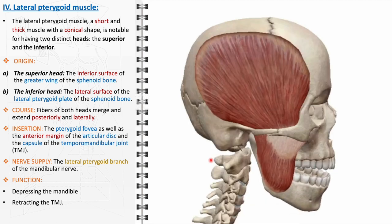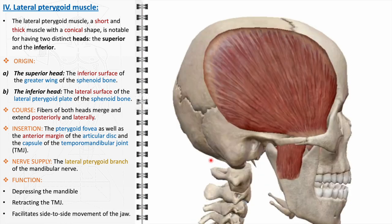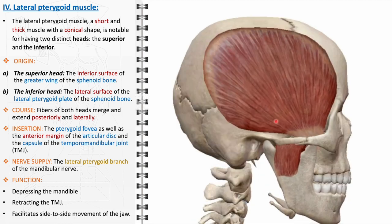The lateral pterygoid enables side-to-side movements of the jaw, which are crucial for the grinding and crushing phases of mastication. Clinically, dysfunction or imbalance in this muscle can lead to temporomandibular joint disorders, causing pain, clicking sounds, or limited movement in the jaw. It is also often implicated in bruxism and other myofascial pain syndromes. Due to its deep location and complex functions, it can be challenging to treat disorders involving the lateral pterygoid.